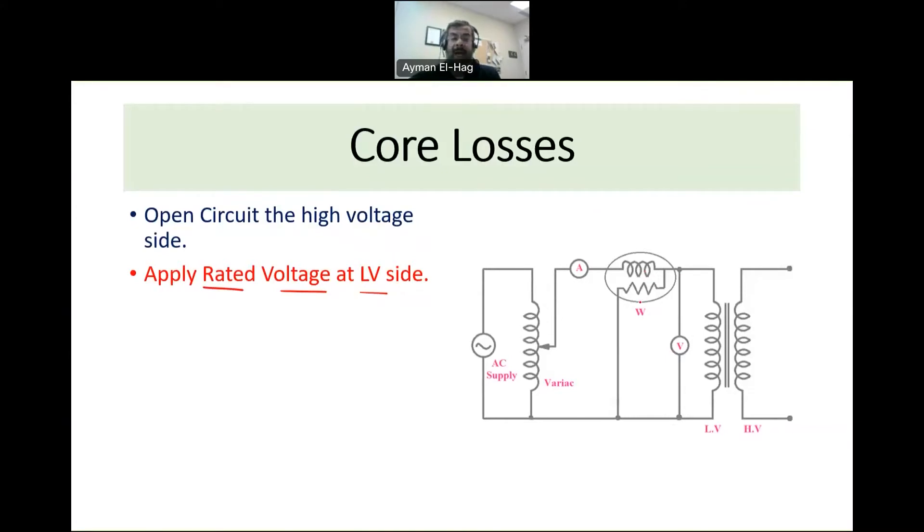This power loss is actually approximated to the no-load loss because there is a little bit of winding loss. As you can see here from this configuration, this loss is dependent on the voltage - it is a function of the voltage, because we have very small current we call it the no-load current or the excitation current. This is usually 3 to 5 percent of the rated current, so there will be some losses in the winding but it's very negligible compared to the core loss.